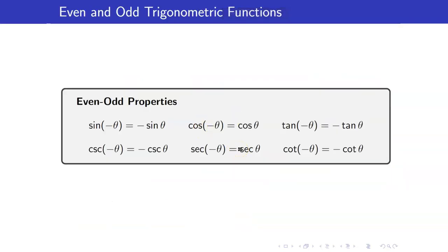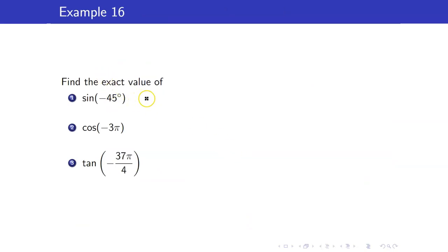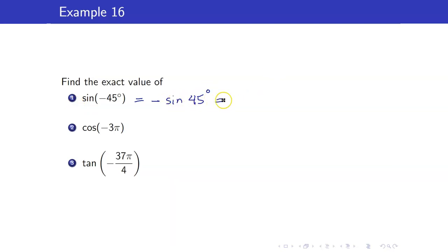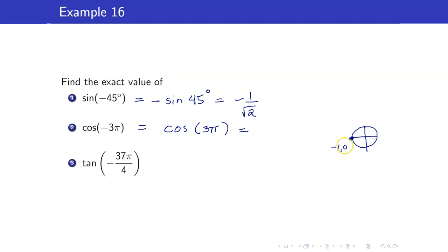The even functions are cosine and secant. The odd functions are sine, tangent, cosecant, and cotangent. Using these properties: sine(-45°) = -sin(45°) = -1/√2. Cosine(-3π) is even, so this equals cosine(3π). At 3π you land at (-1, 0), so cosine(3π) = -1.